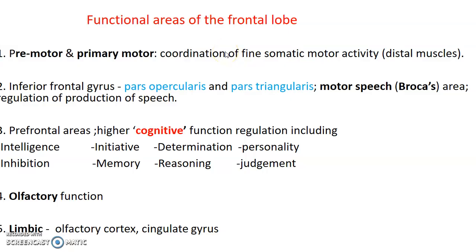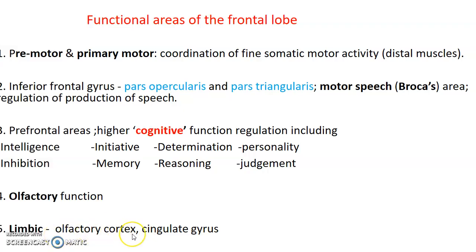The functional areas of the frontal lobe include: first, the primary motor area at the precentral gyrus for movement of skeletal muscles, especially distal muscles. Second, the motor speech area or Broca's area, formed by pars triangularis and pars opercularis on the inferior frontal gyrus. Third, the prefrontal areas at the frontal pole for cognitive functions involving intelligence, inhibition, initiative, memory, determination, reasoning, personality, and judgment. Fourth, olfactory function for smell. Fifth, limbic function located at the olfactory cortex and the cingulate gyrus.